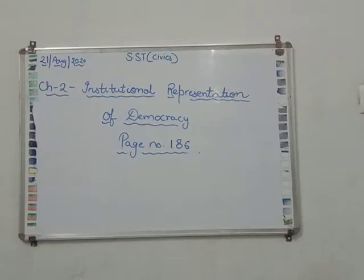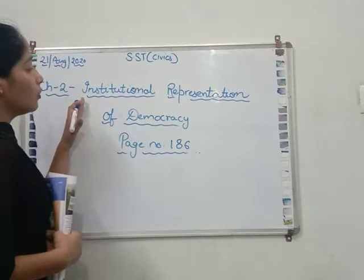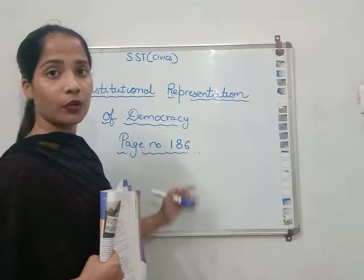Hello class 7. For today we will read the 2nd chapter of Civics, that is Institutional Representatives of Democracy. Open page number 186 of your book. I hope you have opened your book. Now we will be about learning outcomes.